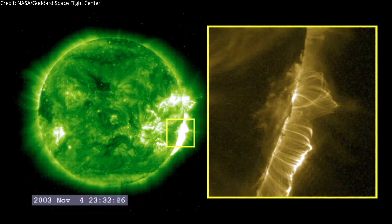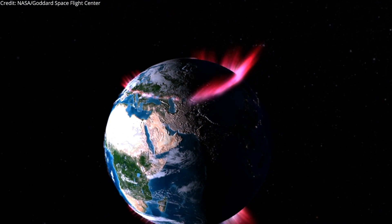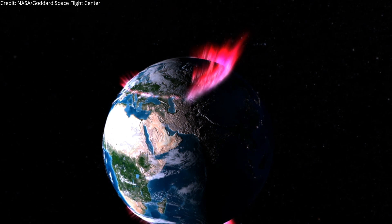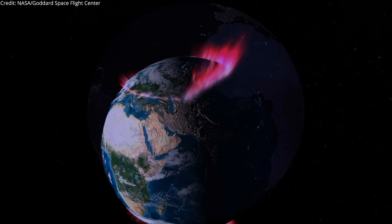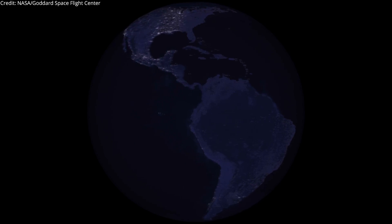A powerful X-class flare like that can create long-lasting radiation storms, which can harm satellites, and even give airline passengers flying near the poles small radiation doses. X-flares also have the potential to create global transmission problems and worldwide blackouts.